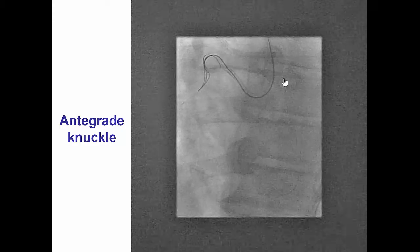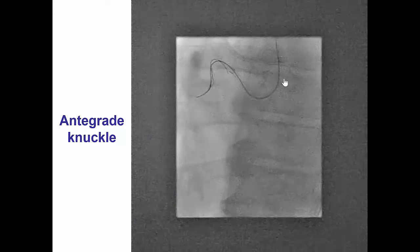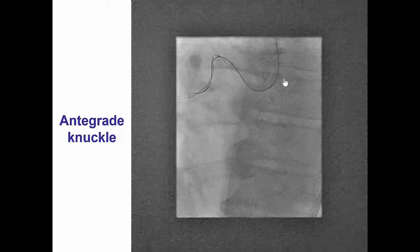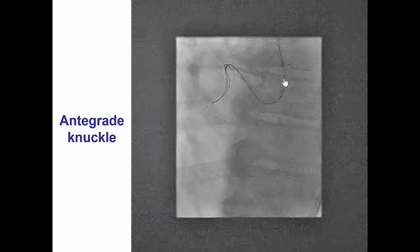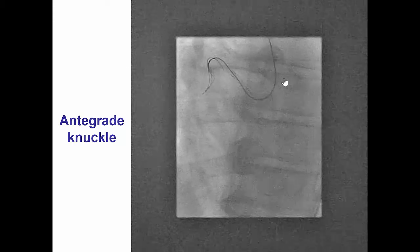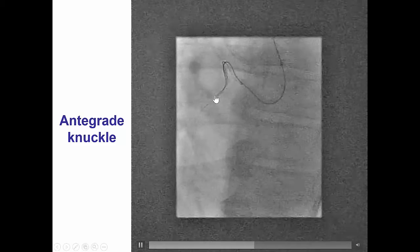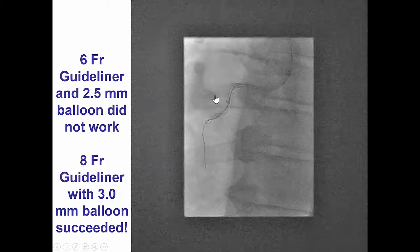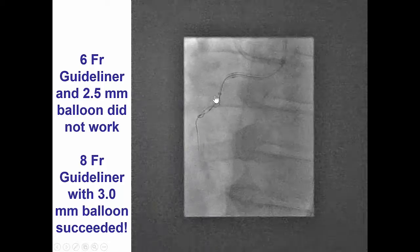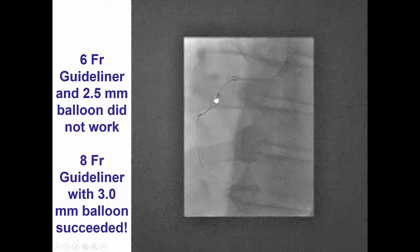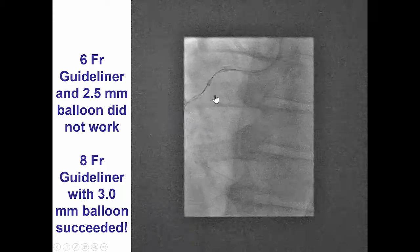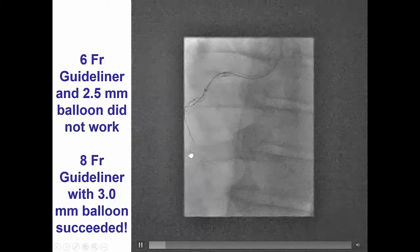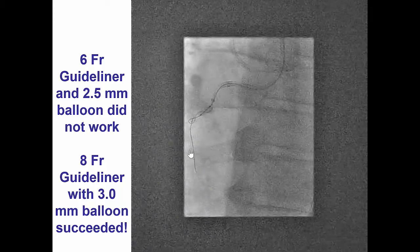Since we now have a marker of the vessel course, which is the retrograde wire, we were able to advance an antegrade wire sub-intimally into the proximal and mid-right coronary artery. We then advanced a guideliner — initially a 6-French guideliner to the mid-right coronary — and attempted to do reverse CART; however, that was not successful.